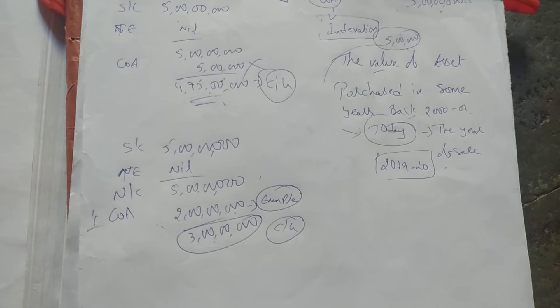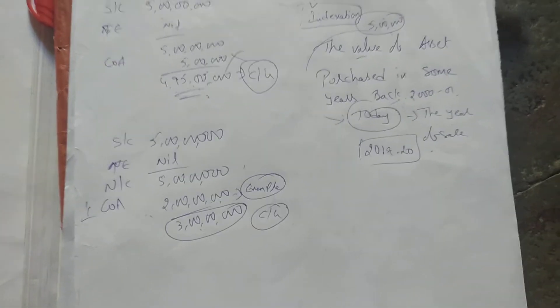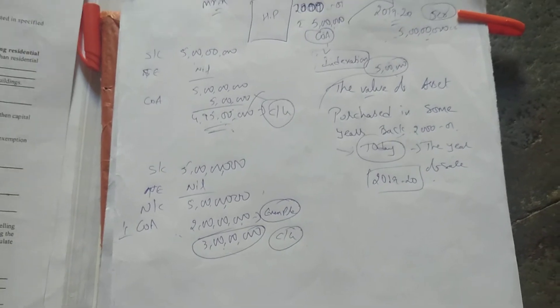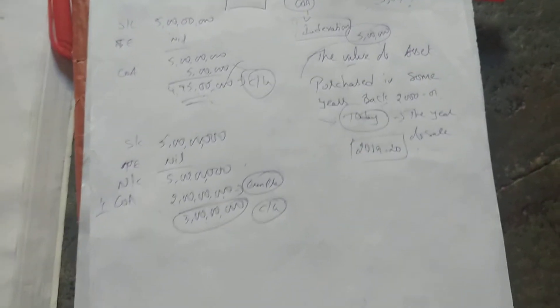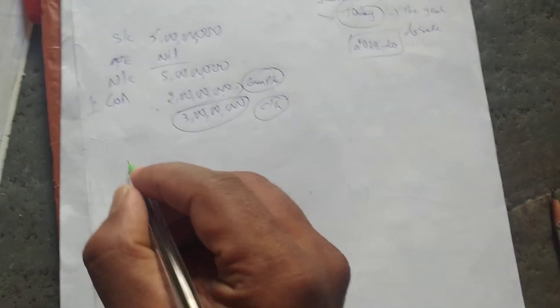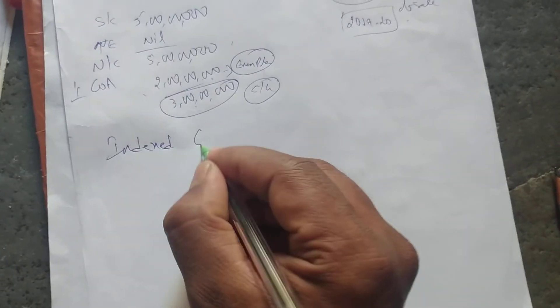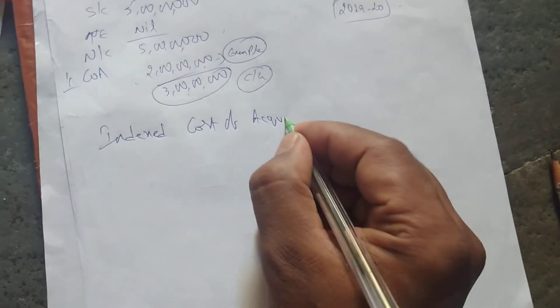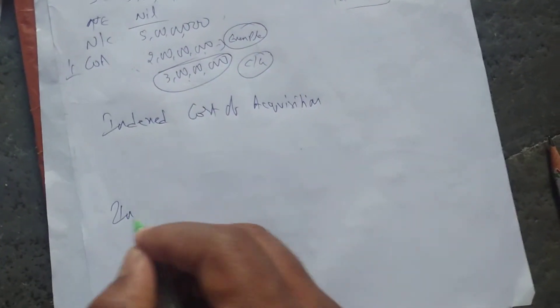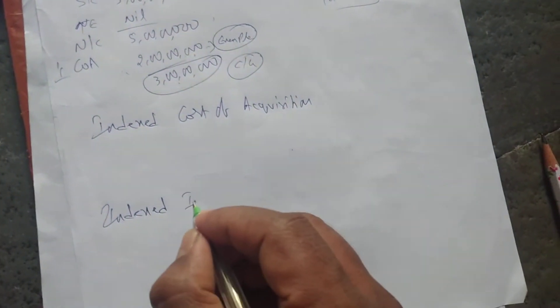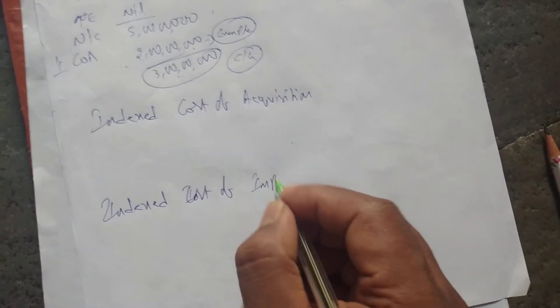For indexation we have formulas. We have a formula for indexed cost of acquisition and a formula for indexed cost of improvement — both of which we will cover today. So today we'll understand what indexation means and how to find indexed cost of acquisition and indexed cost of improvement.